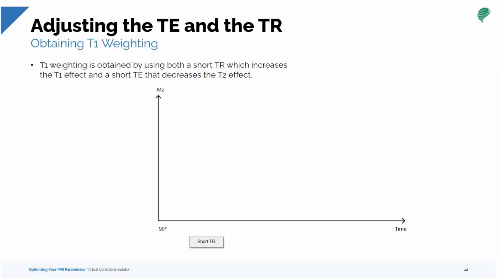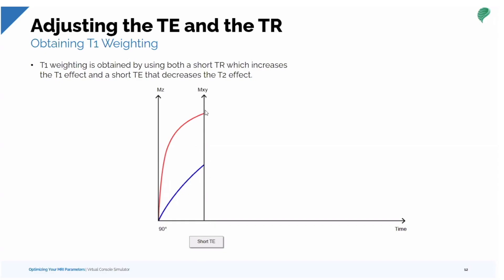To get T1, we use both a short TR and a short TE. The short TR increases the T1 effect, and the short TE decreases the T2 effect — it wipes out that T2 effect. With the longitudinal relaxation occurring for both tissues, and with a short TE by the time we tell the system to take the image, the differentiation between the two tissues is very great. The tissue in red will be very bright, where the tissue in blue will be darker, or hypo-intense.